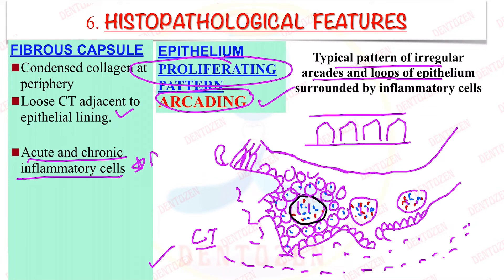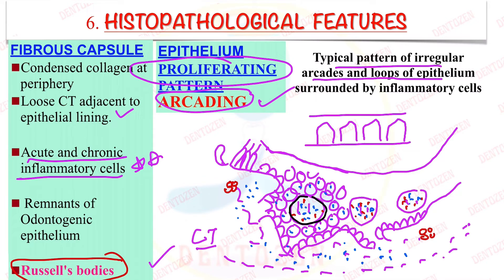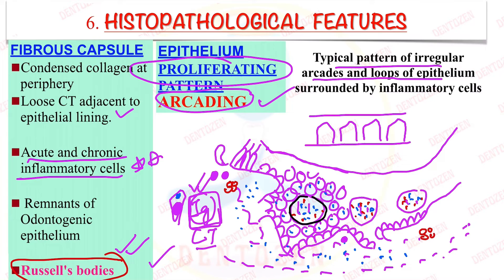The most important thing in the connective tissue is the presence of acute and chronic inflammatory cells — we see a lot of lymphocytes, plasma cells, and macrophages. We can also see remnants of odontogenic epithelial islands. Another important body seen in the wall of radicular cysts is Rushton bodies — round eosinophilic structures. These are immunoglobulin inclusions: plasma cells produce immunoglobulins, which accumulate as inclusions in the cells.